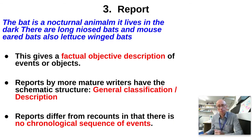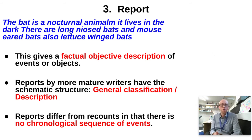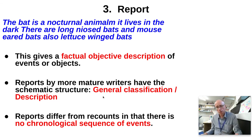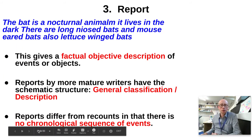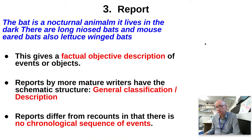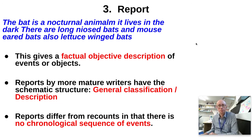We then have a third type of category that Jean Rothery was talking about, and this is reports. This is a factual, objective description of events or objects — very different to a recount. If you're thinking about the schematic structure, it's usually some kind of general classification, like a definition of the thing being talked about, followed by the description. It differs from a recount because there's no chronological sequencing of events. There's an example: 'The bat is a nocturnal animal. It lives in the dark. There are long-nose bats, and mouse-eared bats, also lettuce-winged bats.' So that follows the general classification in the first sentence, and then you've got the description in what follows.